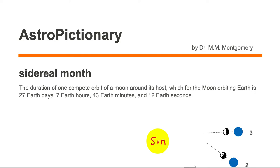Sidereal month is the duration of one complete orbit of a moon around its host, which for the moon orbiting Earth is 27 Earth days, 7 Earth hours, 43 Earth minutes, and 12 Earth seconds.